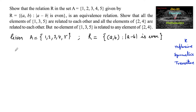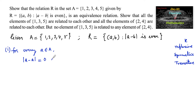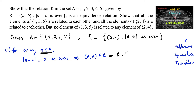For every a belonging to set A, we can say that |a - a| = 0, which is also considered to be even. This implies that (a, a) belongs to R. For every element a in set A, the difference between the number and itself is always 0, which is even. So (a, a) belongs to R, and hence R is reflexive.